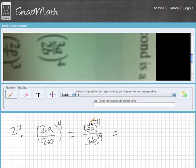Then you have to distribute the fourth power to each one of these terms. 3 to the fourth is 81, and a to the fourth is just a to the fourth.